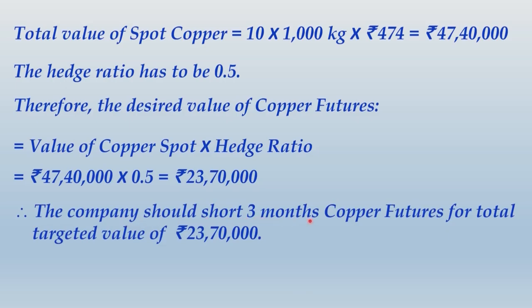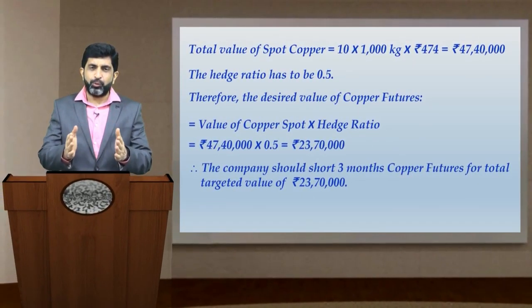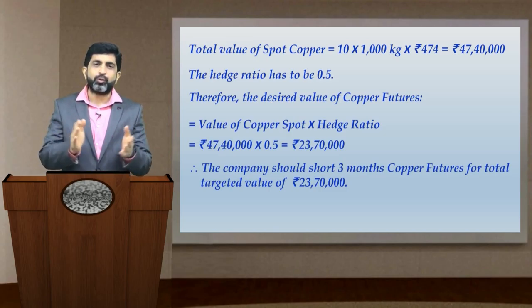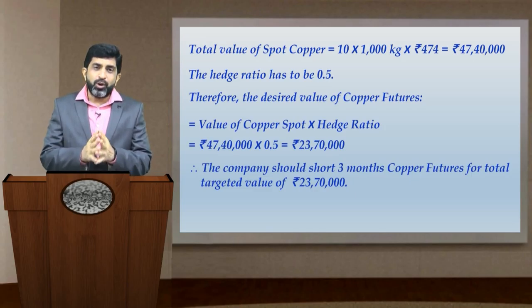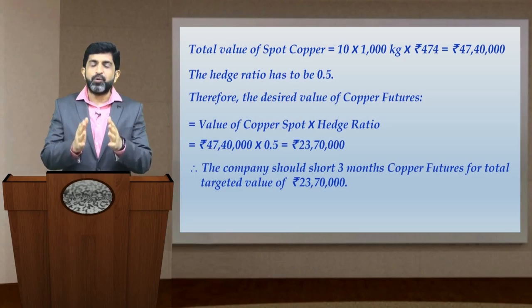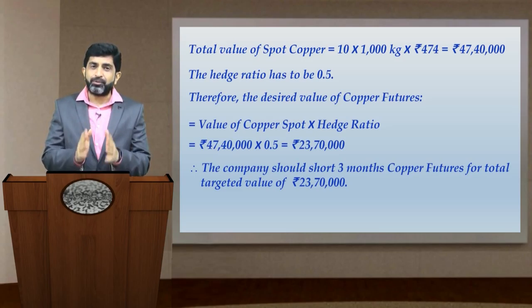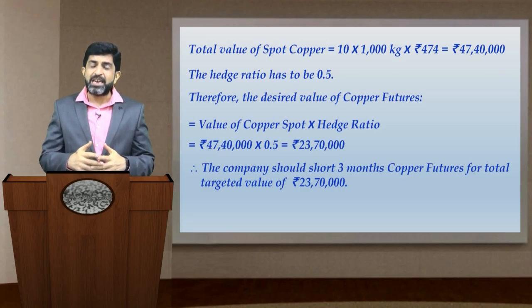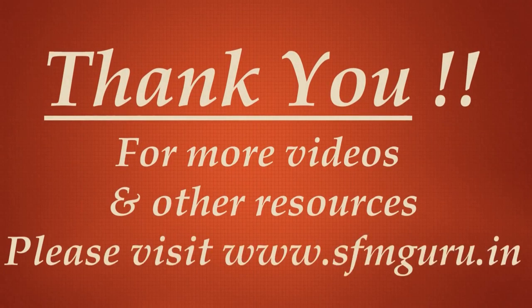So the company should short 3-month copper futures for a total target value of rupees 23,70,000. This was quite an easy concept, particularly after having learnt hedging through index futures. Please subscribe to the channel if you haven't done so yet, and don't forget to turn on the notification bell. I will be committed to keep uploading more videos like this. Thank you so much for watching.